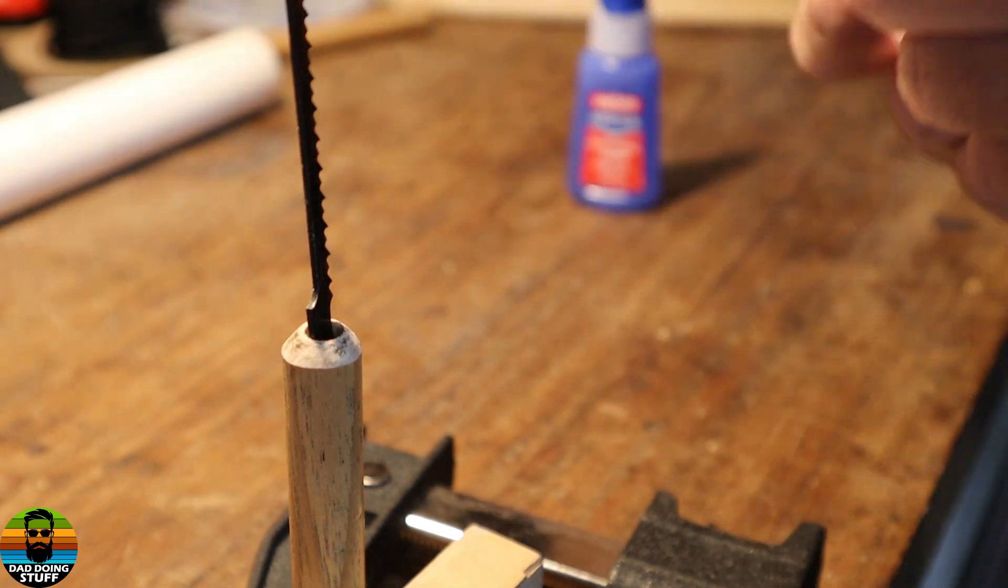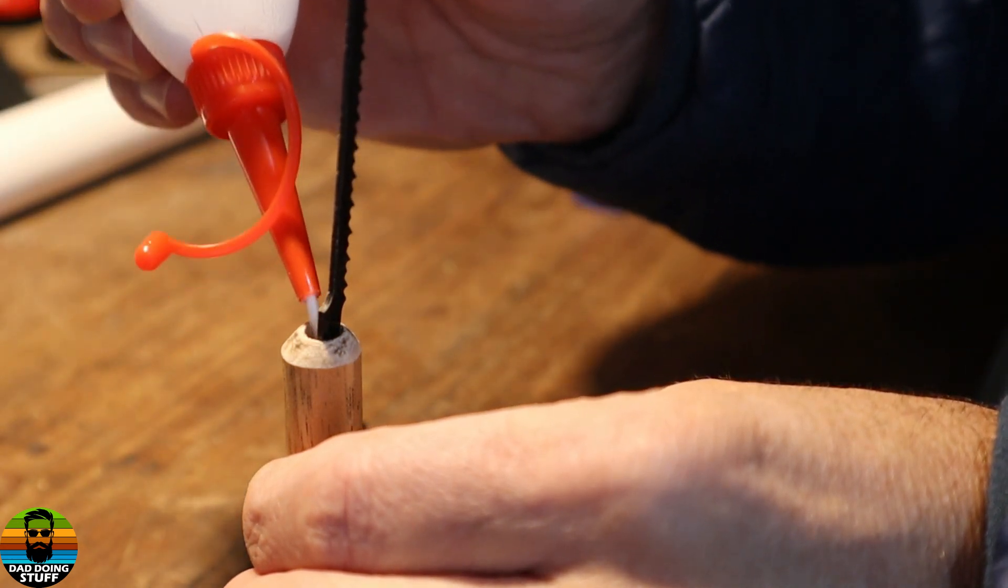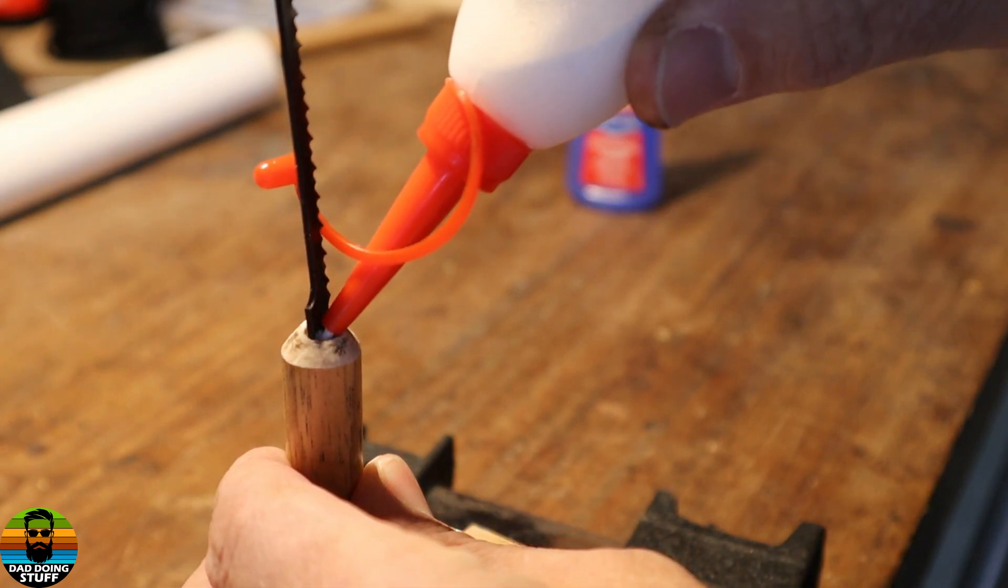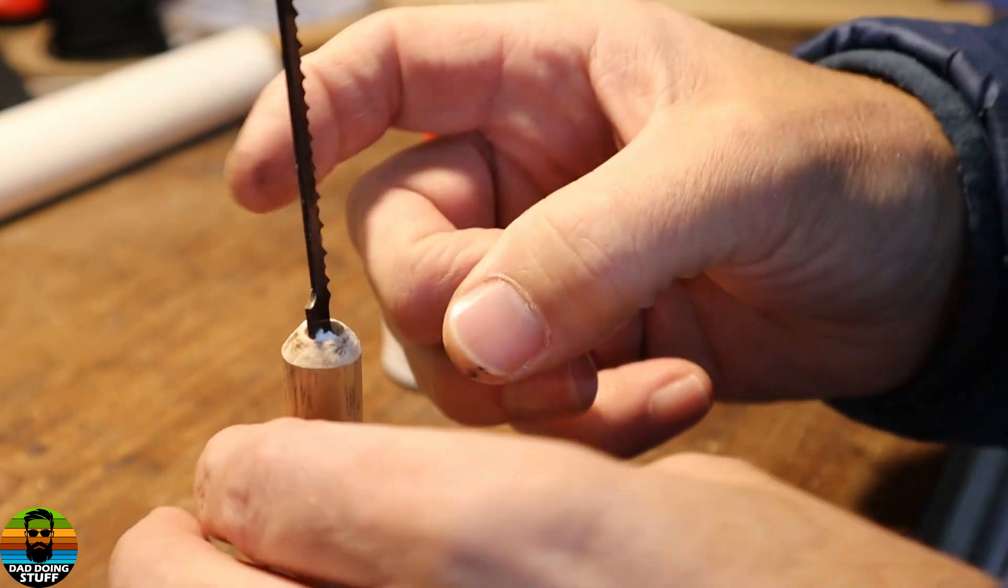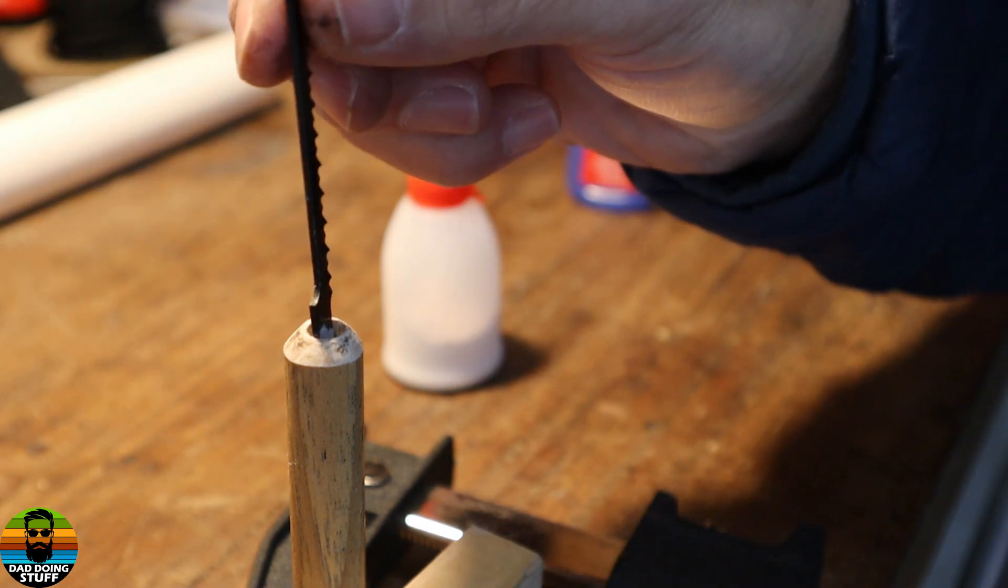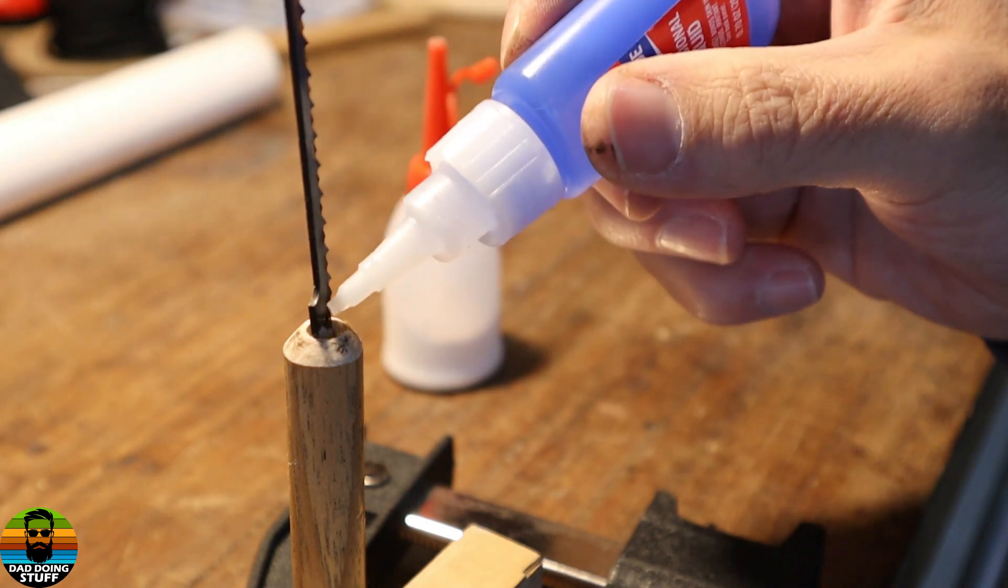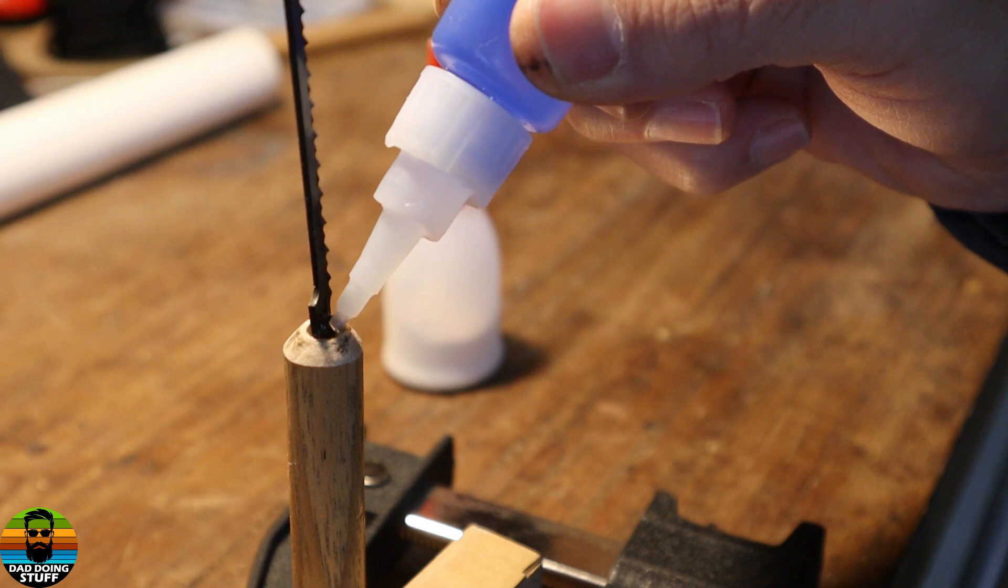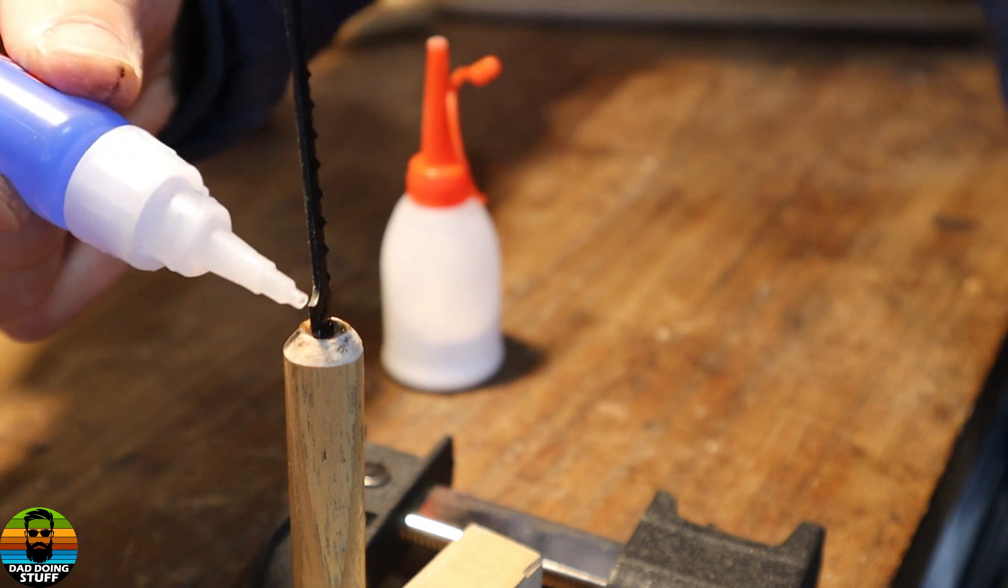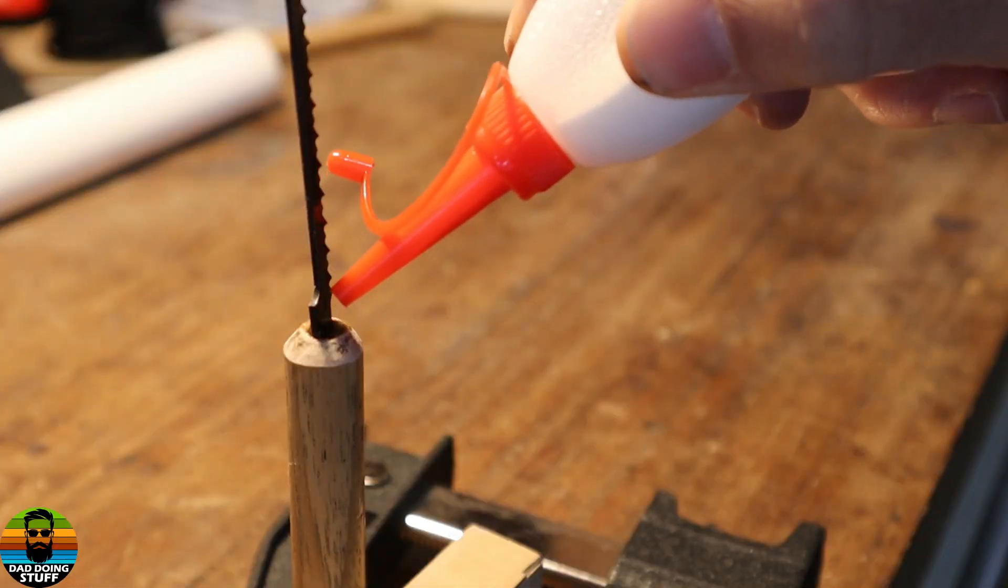So I'm gonna start by putting baking soda down both sides of this. And then I'm gonna start putting down some drops of super glue. Drops and you wanna put this in basically in layers and have a little bit more baking soda.